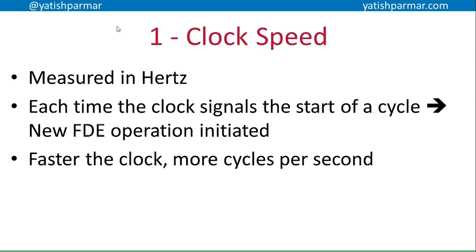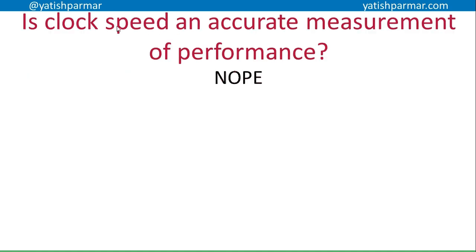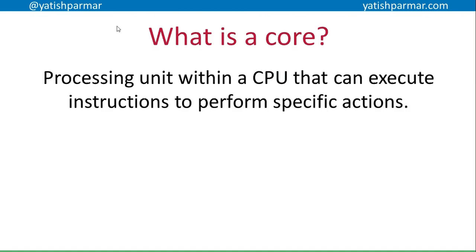Obviously, we want to improve CPU performance because the more of those cycles you are completing per second, the less time it's going to take for the end user to get the result. The first way to improve the performance of the CPU is to increase the clock speed. We measure clock speed in hertz. Each time the clock signals the start of a new cycle, you get a new fetch, decode, execute operation. Therefore, the more clock cycles you have per second, the more fetch, decode, execute operations are being processed each second. Is clock speed an accurate measurement of performance? The answer is no, because floating point operations are exceedingly complex and may take more time to complete. Therefore, there are alternative measures for the speed of a CPU, not just clock speed.